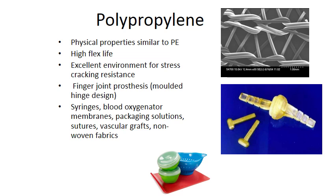Polypropylene came up when we talked about hernia mesh repair. The picture shown is of a knitted polypropylene mesh. Physical properties are very similar to polyethylene — very stable and inert — but polypropylene has a very high flex life, making it excellent for molding, knitting, and braiding. It has excellent resistance to stress cracking and is used in finger joint prostheses, syringes, and blood oxygenator membranes.